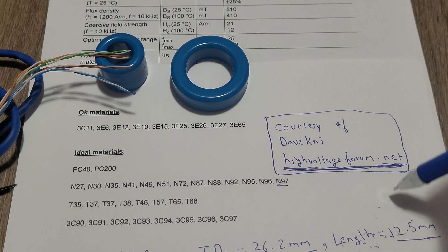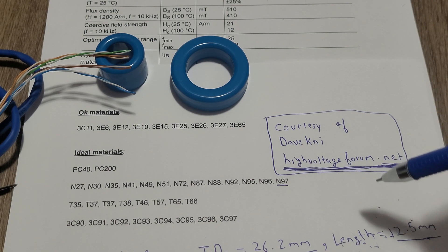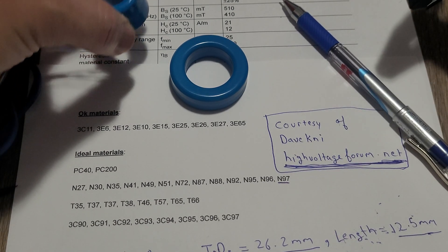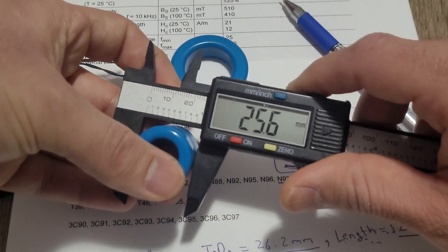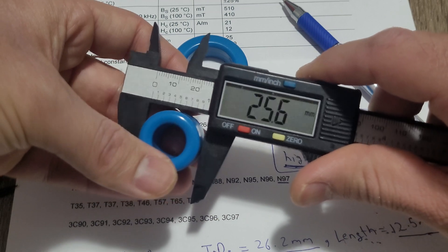So if your H bridge uses MOSFETs, whether half or full H bridge, you can use about this size of the toroid core. If you are using IGBTs, you can use this size core.